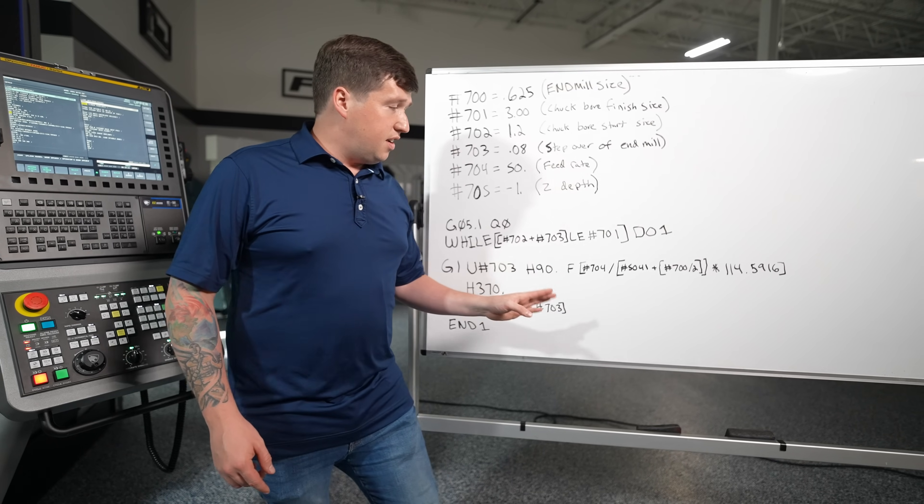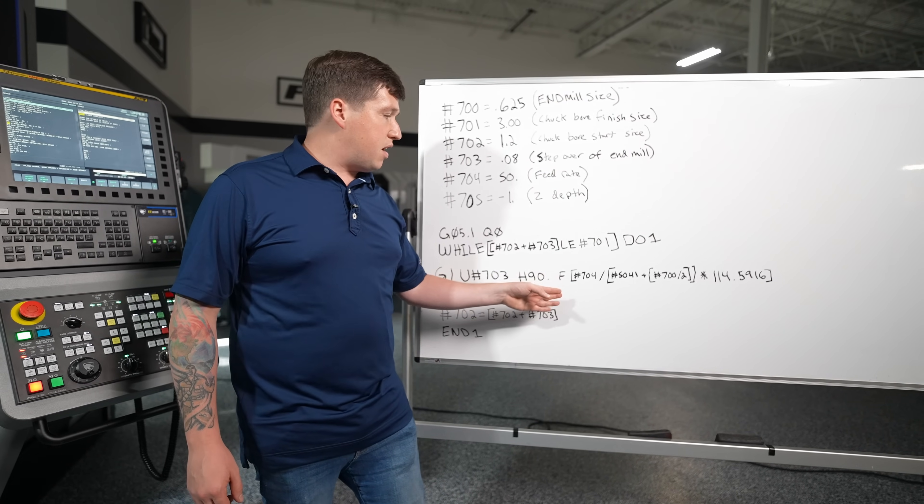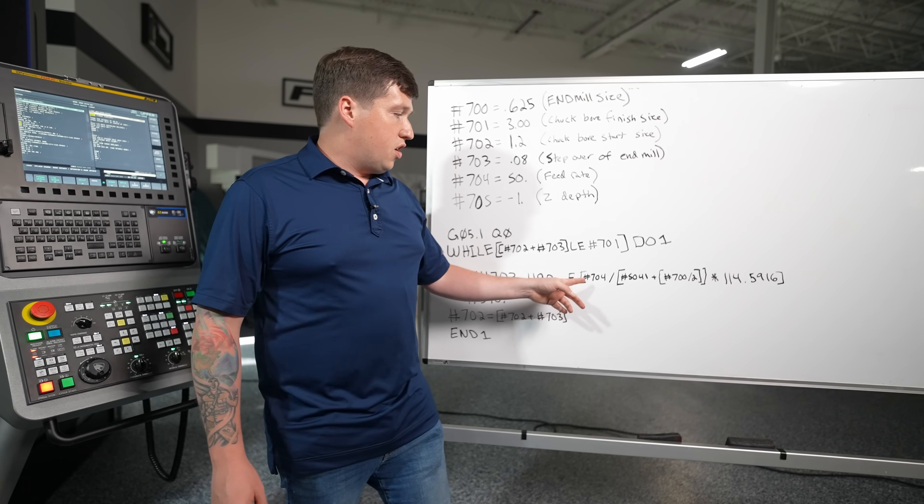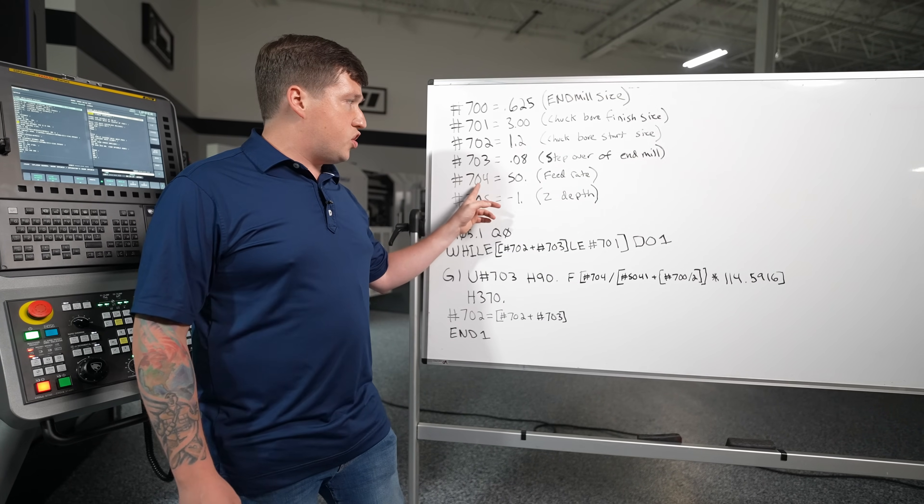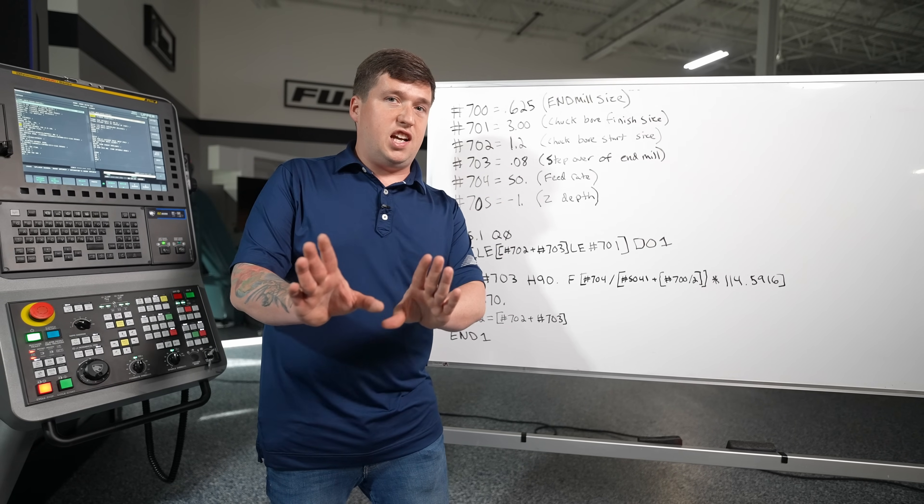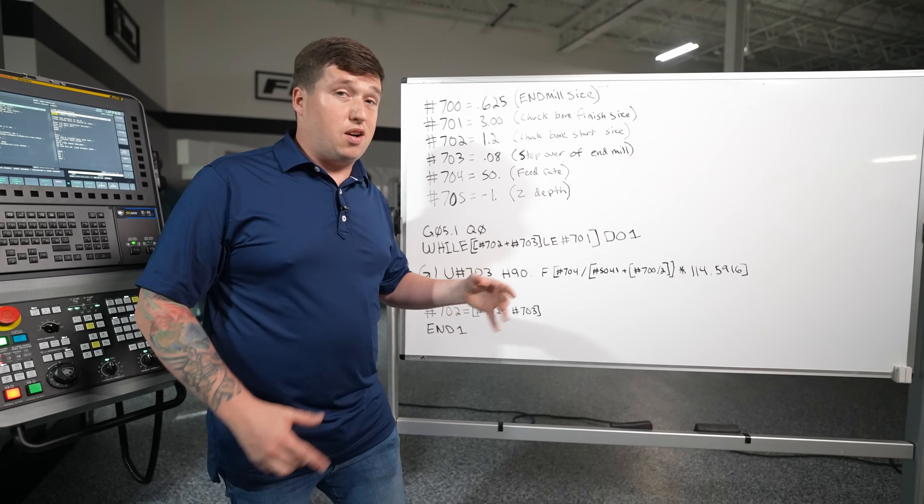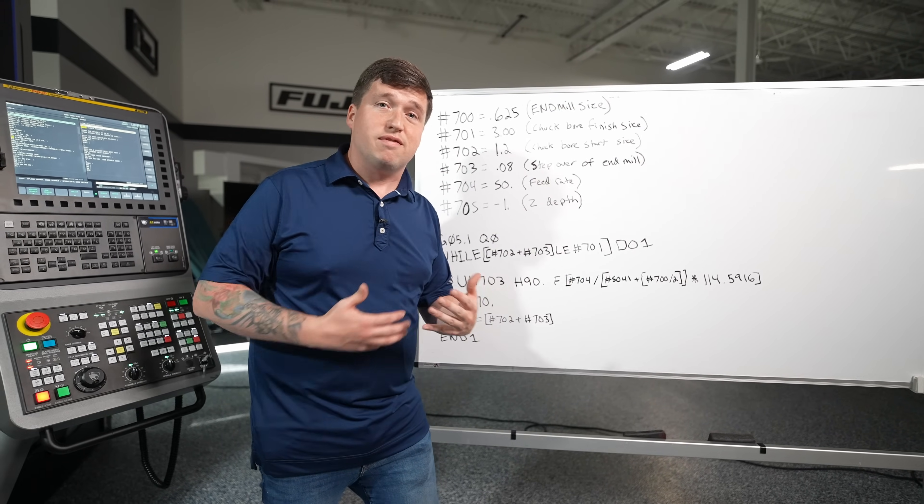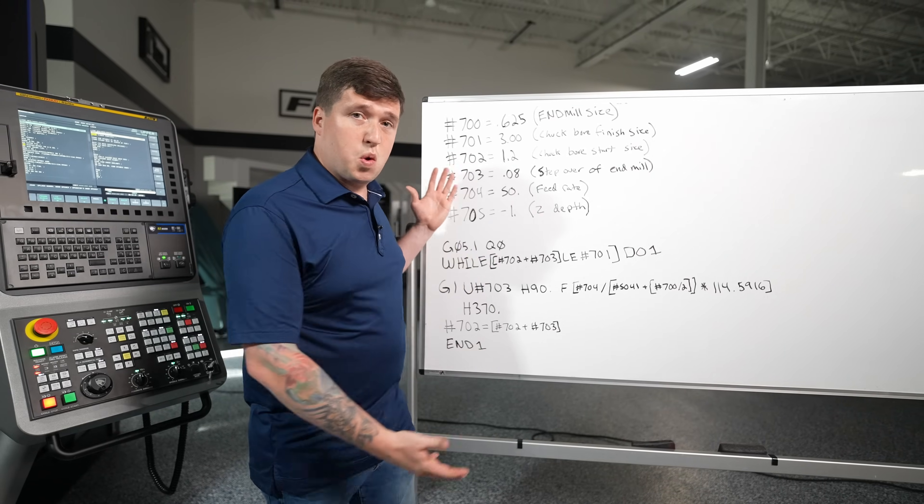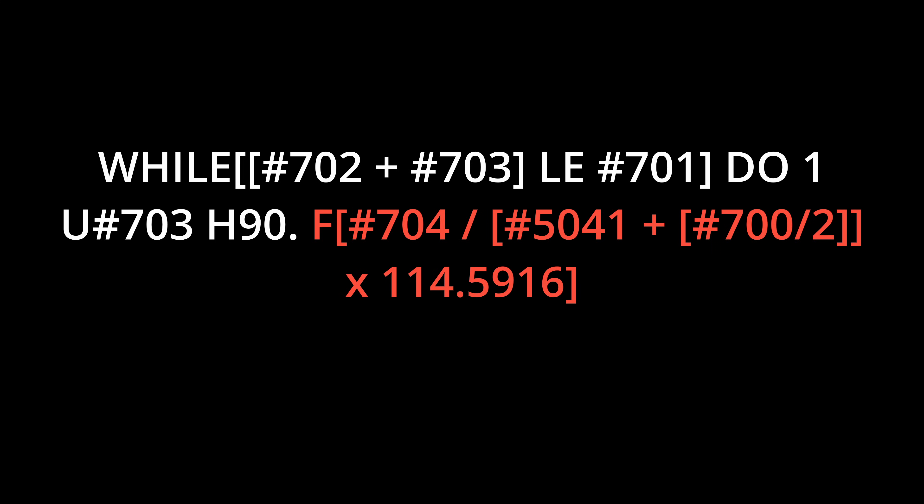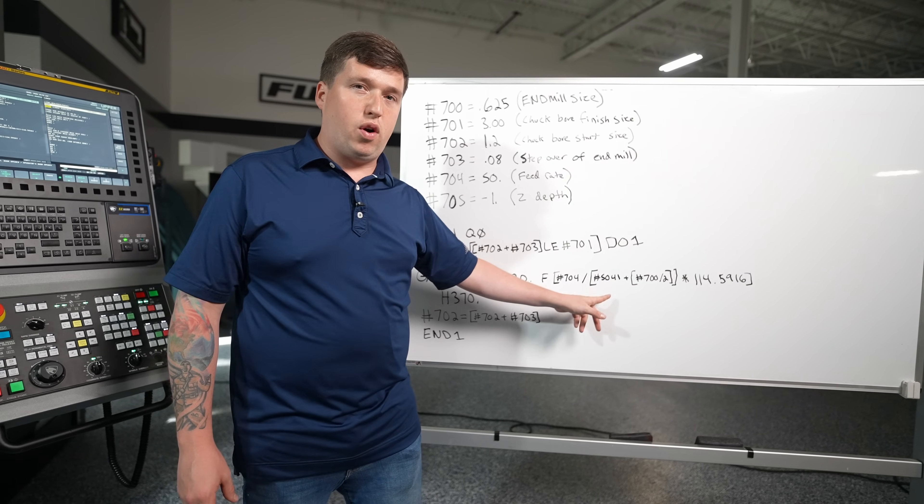Now this right here is actually my favorite part of this macro. This is your feed rate. So right here we're going to take our inches per minute or millimeters per minute. I don't know why I need to explain this but these macros work in intrametric. I don't get why people ask me for the metric version. Just use metric numbers this will work. Anyways so we're going to take our inches per minute and we're going to divide it by pound 5041 plus half our end mill which is pound 700. So pound 700 divided by two is half our end mill. What is pound 5041?